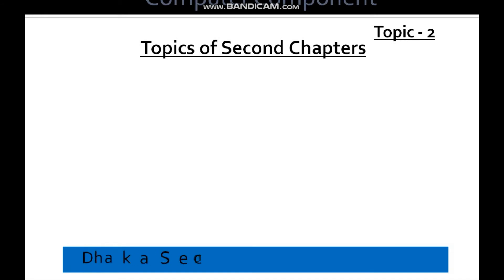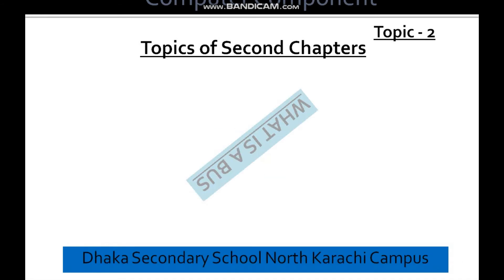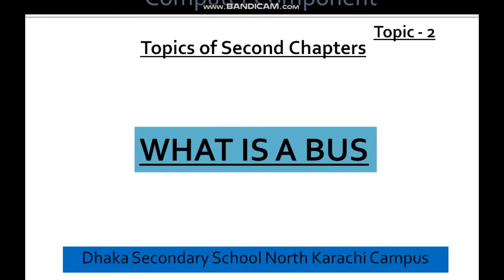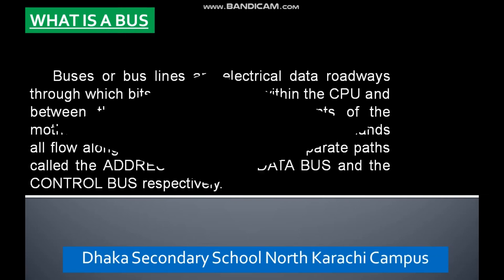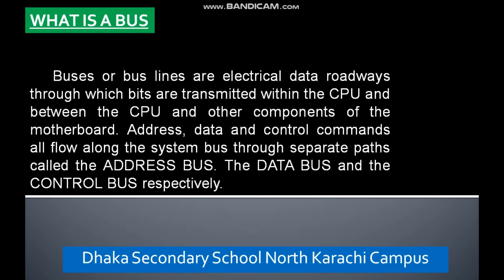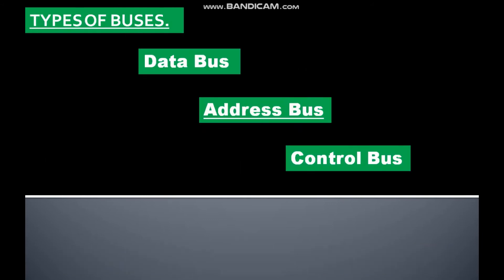The second topic is: What is a Bus? Buses or bus lanes are electrical data roadways through which bits are transmitted within the CPU and between the CPU and other components of the motherboard. We have three types of buses: Data Bus, Address Bus, and Control Bus.